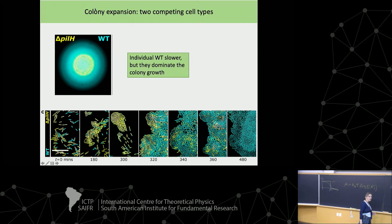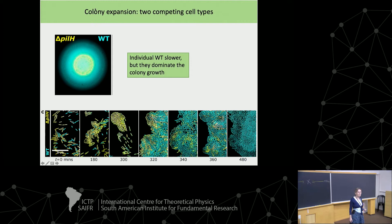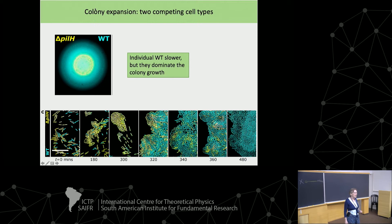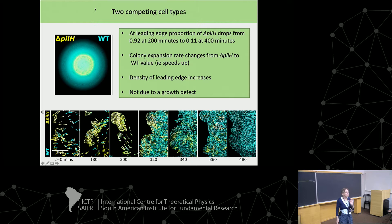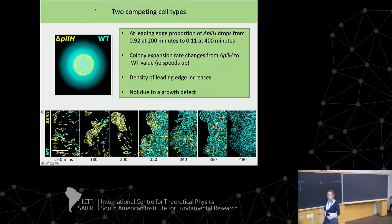Any questions? The cells are growing slowly compared to the spreading, so we should think of this as a movement effect rather than a growth defect. They do divide a bit, but the majority of spreading is just movement. The wild-type dividing faster is not the case — the rate of division is very similar and small. Regarding correlation length: in the bulk you could measure that, and I'll show you some results.